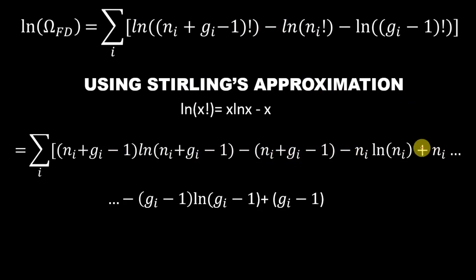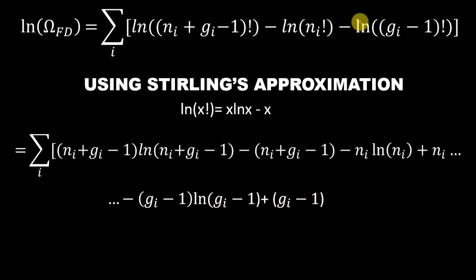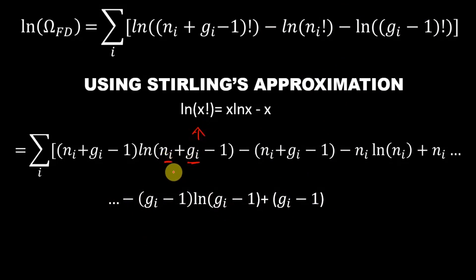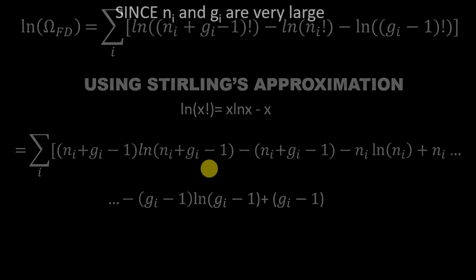Now we have this expression here, where terms get multiplied to give a plus. Now log of (g_i minus 1) becomes (g_i minus 1) log(g_i minus 1), and that minus sign gets multiplied in here. Now n_i and g_i are really large numbers, so we can ignore the minus 1 terms.